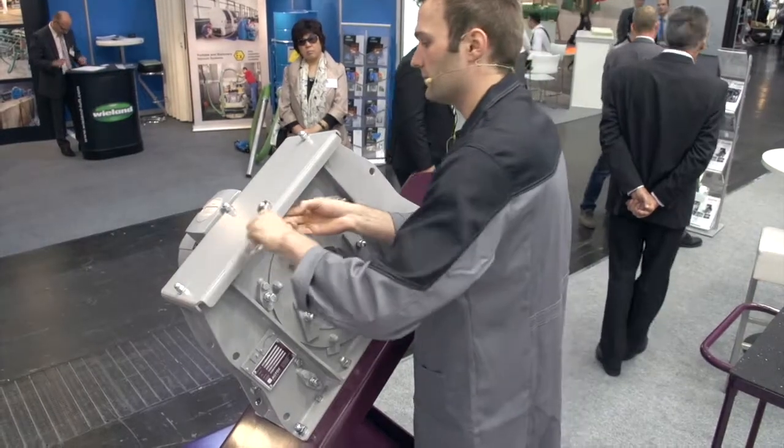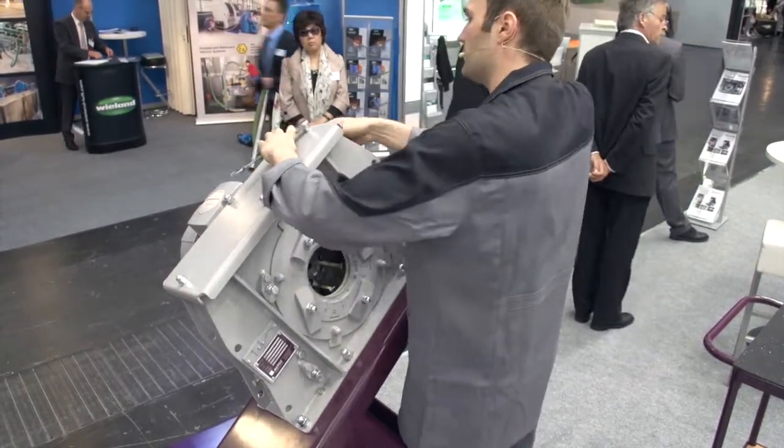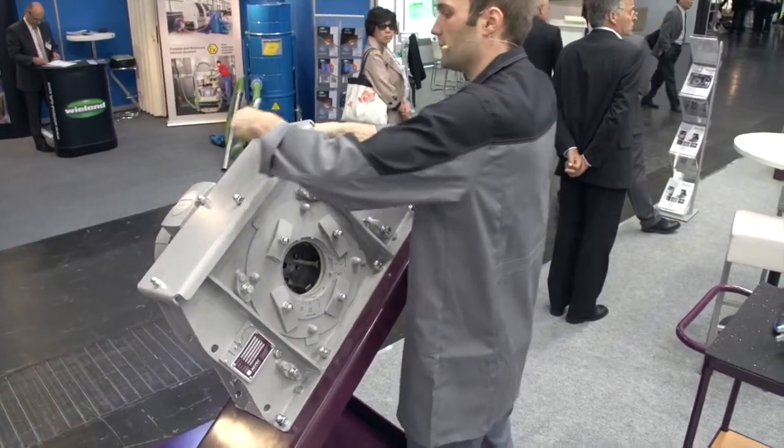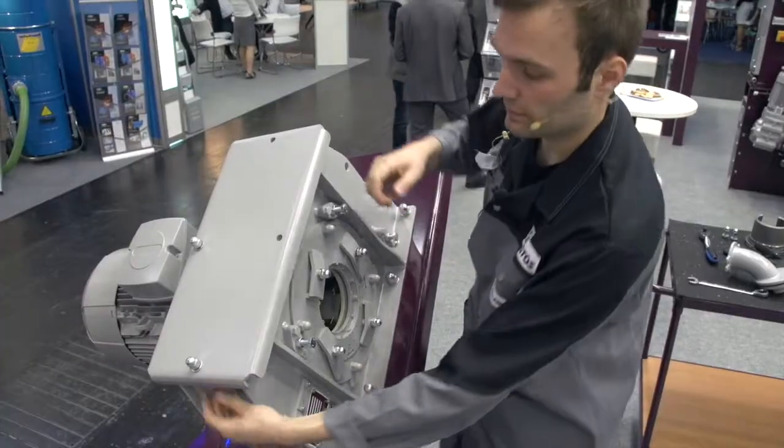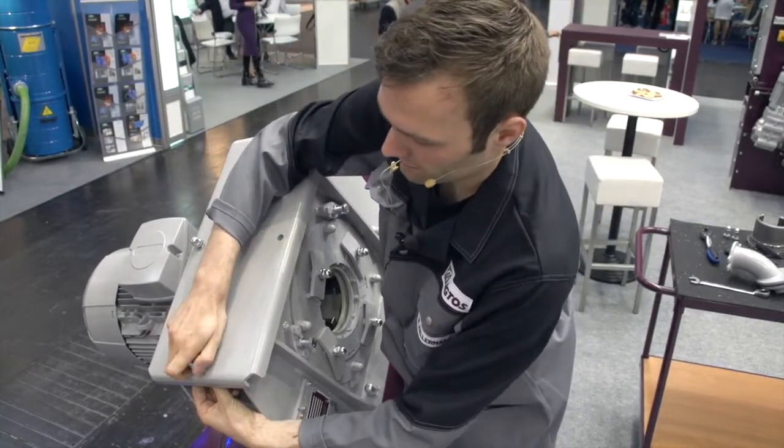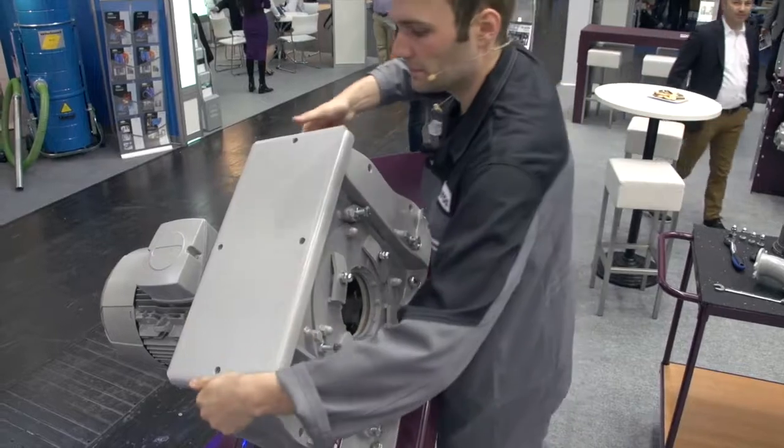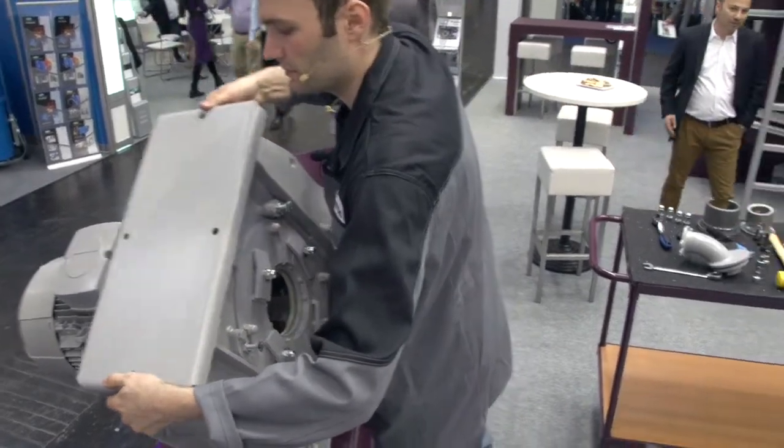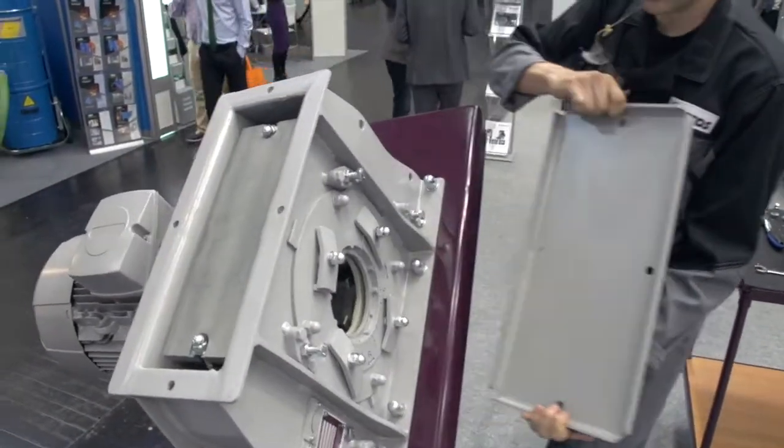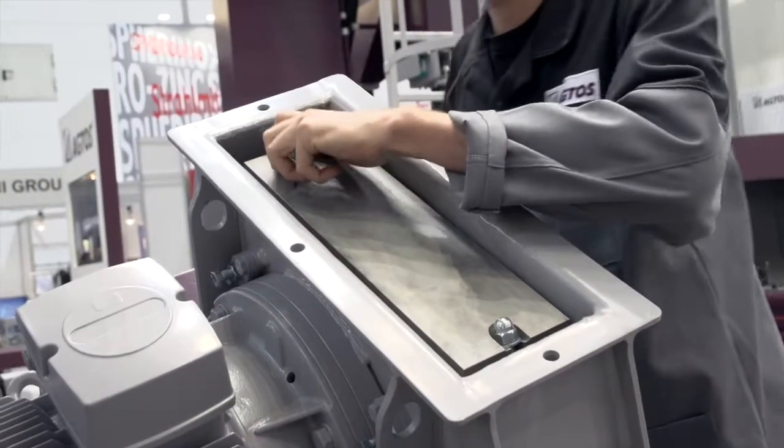To remove the turbine housing cover, loosen and remove the four screws. Removal of the cover.